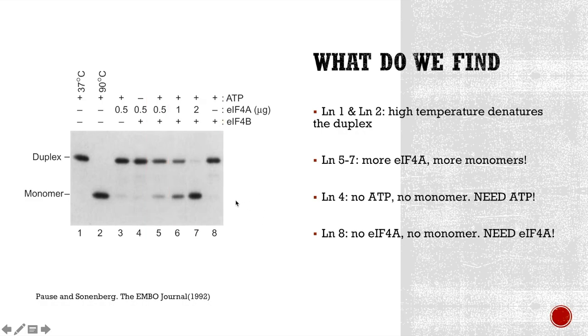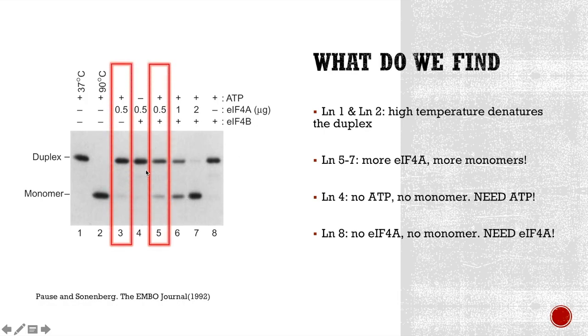Does it mean EIF4A along with ATP is enough to perform helicase activity? Let's look at lane 3 and lane 5. The difference between these two lanes is the presence or absence of EIF4B. Without EIF4B, we could still see a faint band at the monomer position. This indicates that EIF4A along with ATP could unwind RNA. However, with the help of EIF4B at lane 5, we see a lot darker band, which means more duplexes were unwound. Therefore, EIF4A has helicase activity at the presence of ATP, and this activity is enhanced by EIF4B.